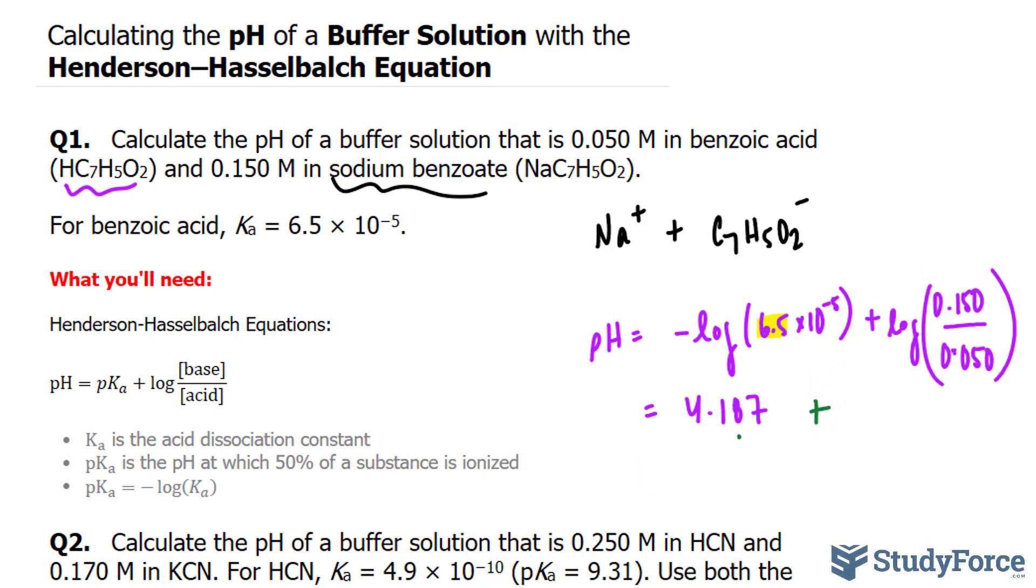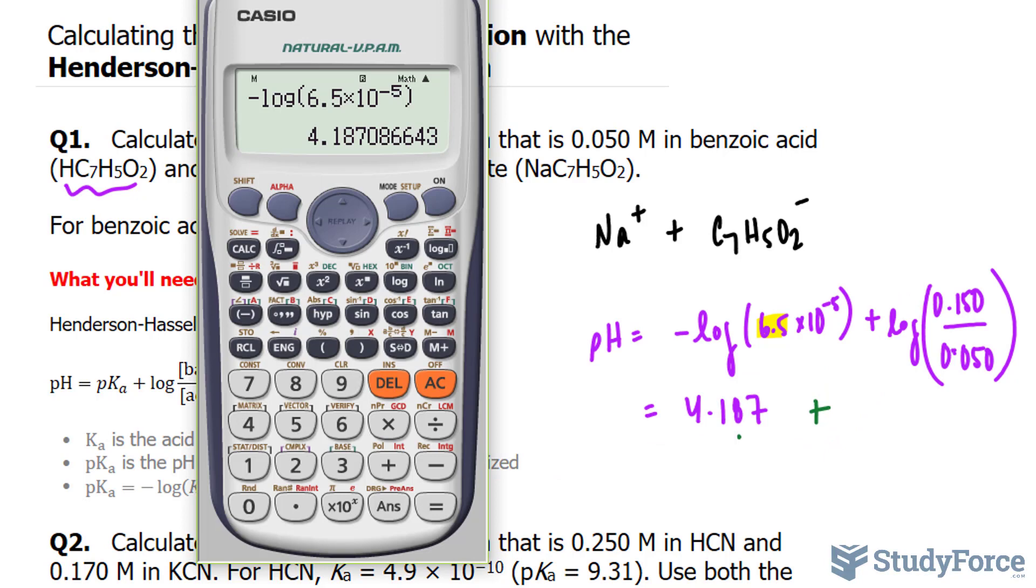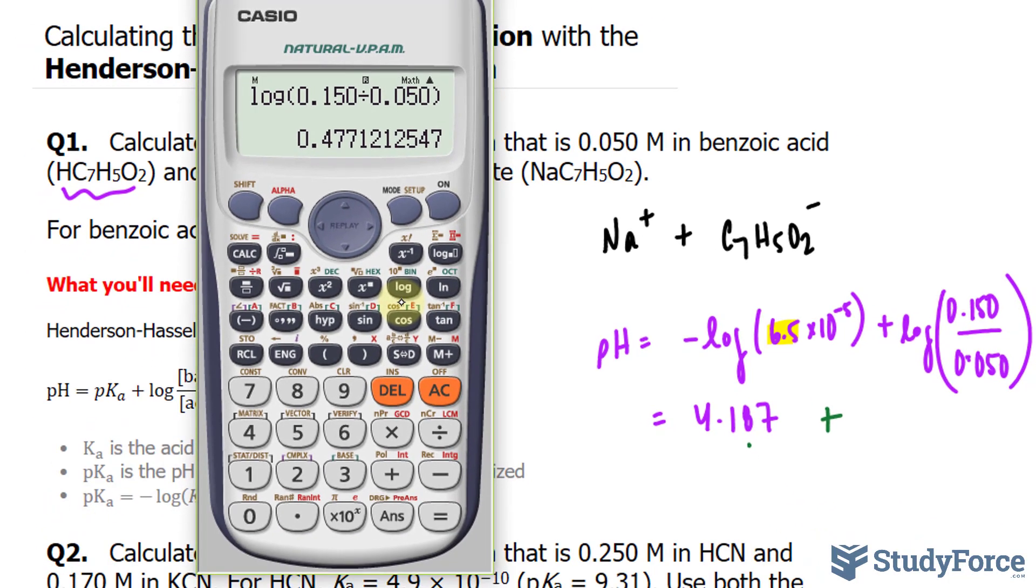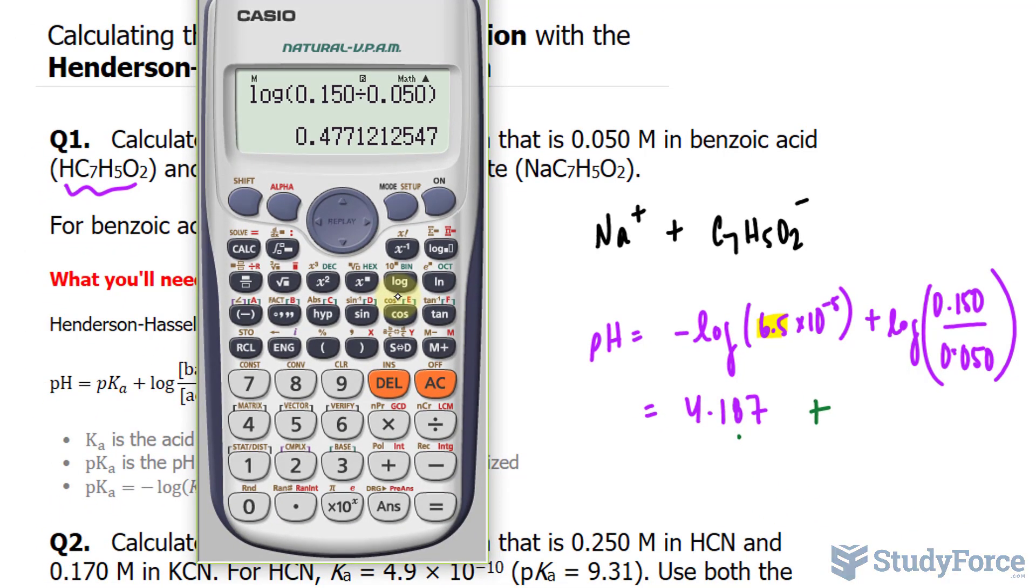Plus, now the log of that expression, 0.150 divided by 0.050, and this gives us 0.4771.